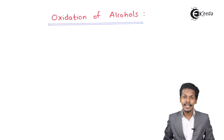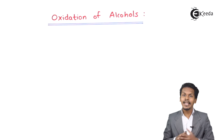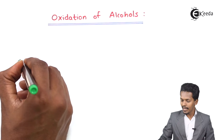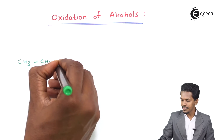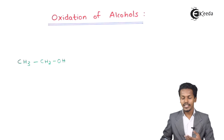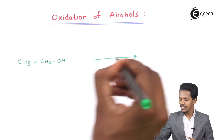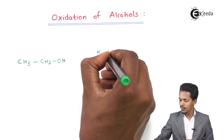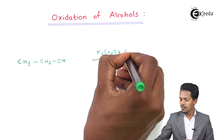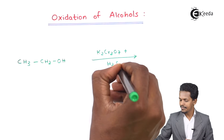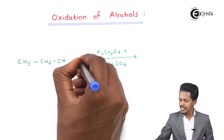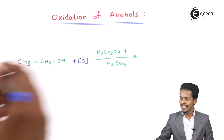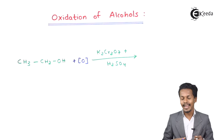Let us talk about the first thing: the oxidation of primary alcohol. For example, consider a primary alcohol CH3CH2OH. If we react it with an oxidizing agent K2Cr2O7 in the presence of sulfuric acid, it will give us nascent oxygen, and that nascent oxygen is responsible for giving the product — which is nothing but an aldehyde.